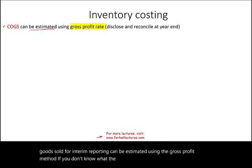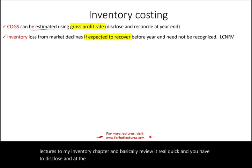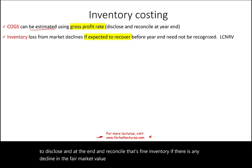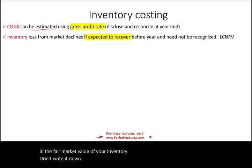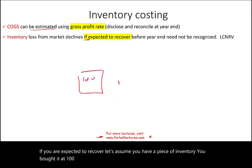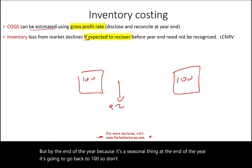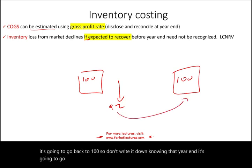If you don't know the gross profit method, please review it in the inventory chapter at Farhat Lectures and reconcile at year end. Regarding inventory: if there is any decline in the fair market value of your inventory, don't write it down if you expect to recover. For example, if you bought inventory at $100 and mid-year the value went down to $92, but by year end it will go back to $100 due to seasonality, don't write it down. But if it's not going to recover, then you write it down using lower of cost or net realizable value.